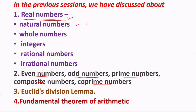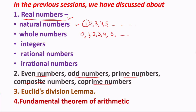Natural numbers are the numbers starting from 1, 2, 3, 4, 5 and so on — all counting numbers are known as natural numbers. Whole numbers are the numbers which contain all the natural numbers as well as zero.